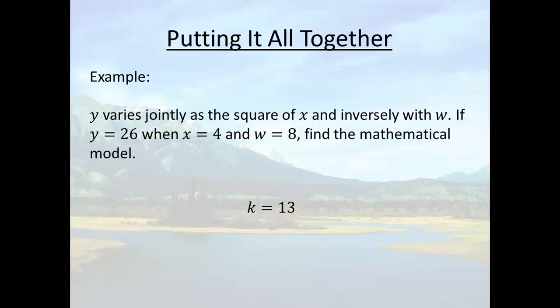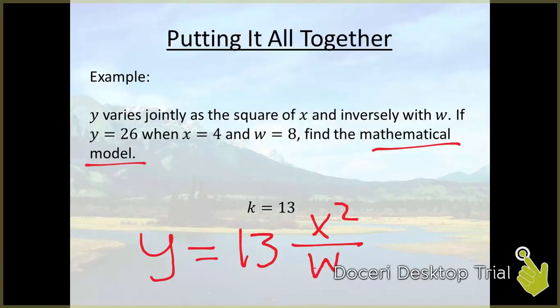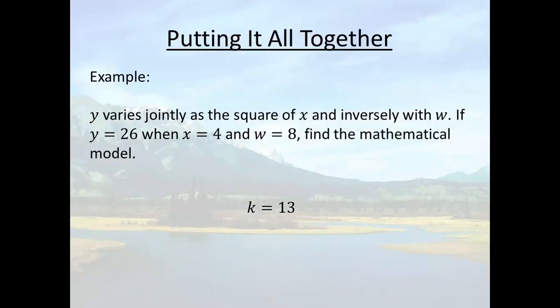Okay now the last thing that they asked us to do is find the mathematical model. y equals kx squared over w, and that's our final answer. So there you have different examples of variation. That's what you're going to be doing in your homework and I think you guys will be just fine with it. So that is the end of this video.